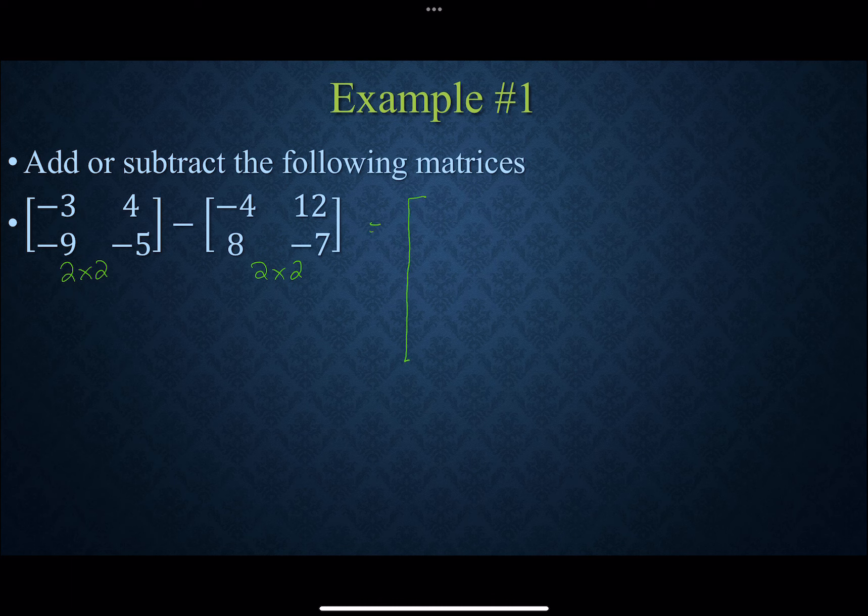All we're going to do is we're just going to simply do negative 3 minus negative 4, we're going to do 4 minus 12, negative 9 minus 8, and negative 5 minus negative 7. So the corresponding elements in the same locations—first row, first column is the negative 3 and the negative 4. They're going to combine and everything else from there.